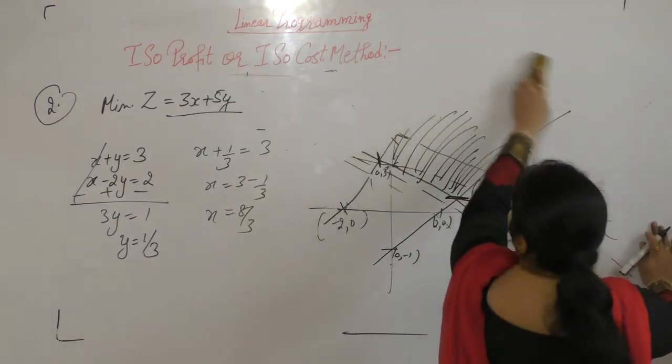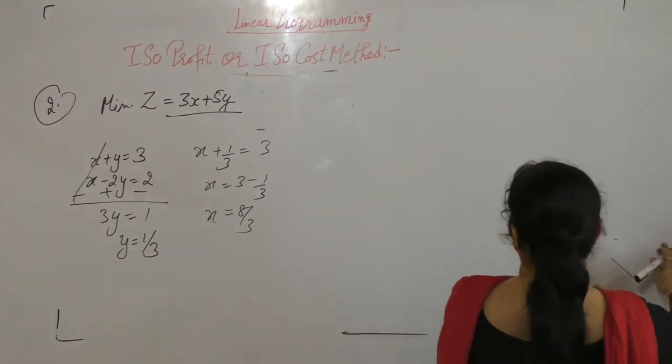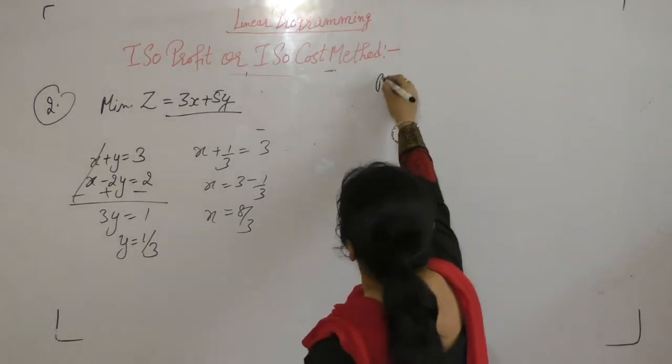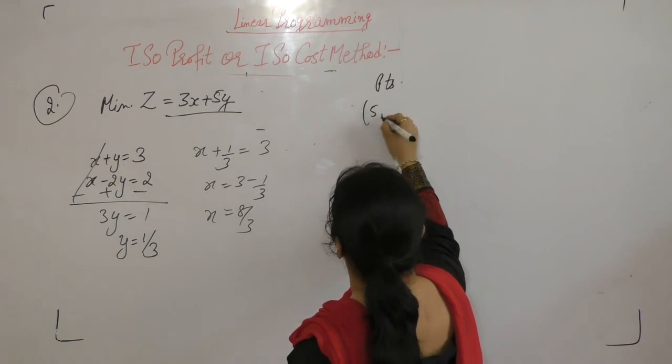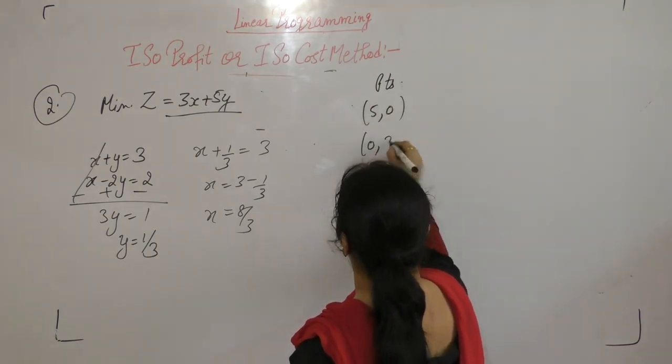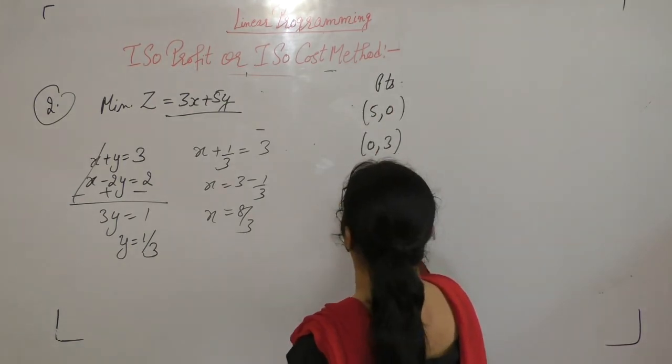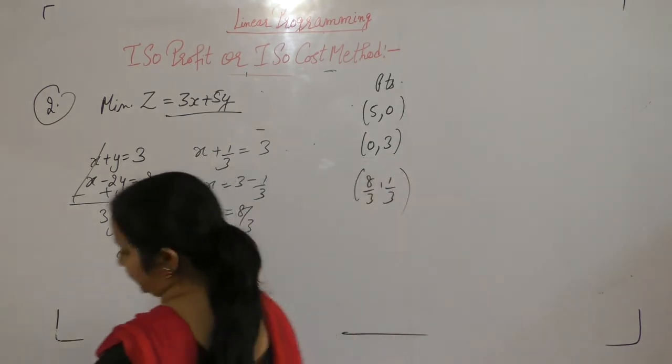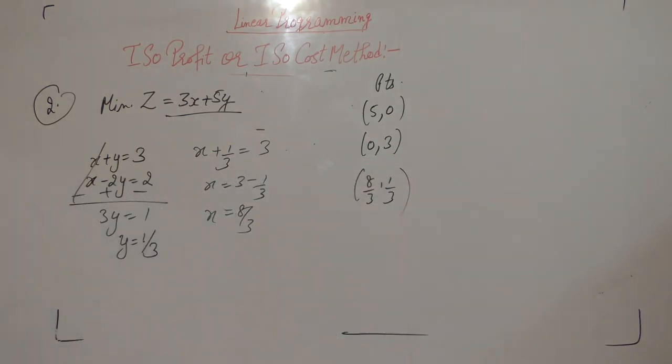Now the corner points are (5, 0), (0, 3), and (8 by 3, 1 by 3).